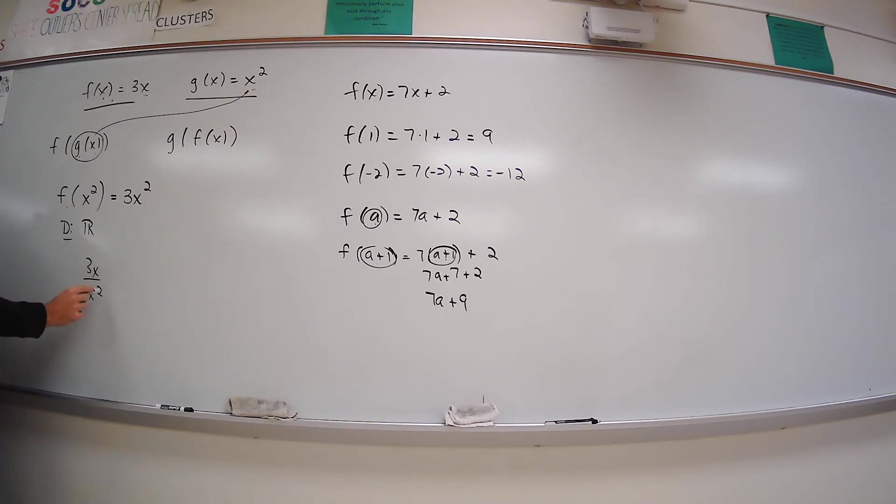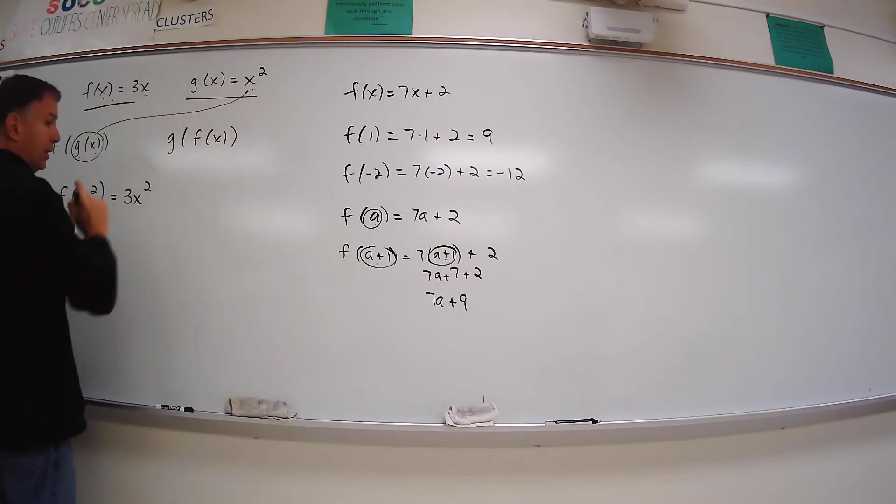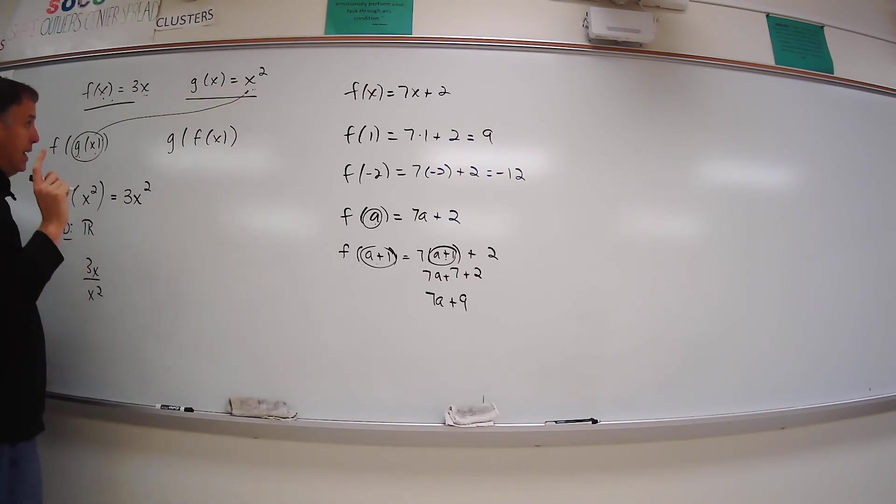3x over x squared. Even though when you look at these separately, you would say it's all real numbers. Here, we know we can't have zero. But we covered that in the first video.